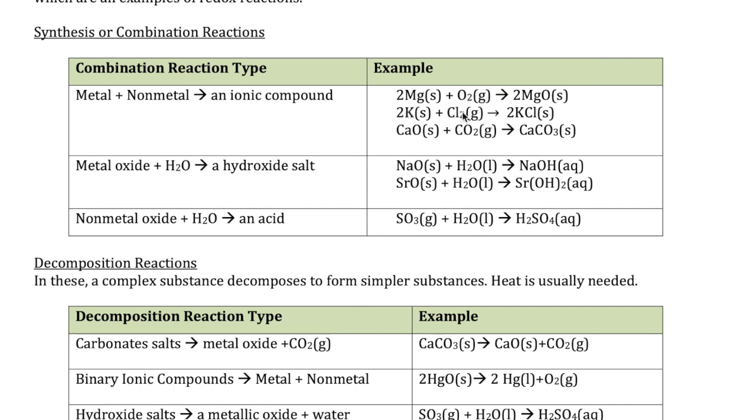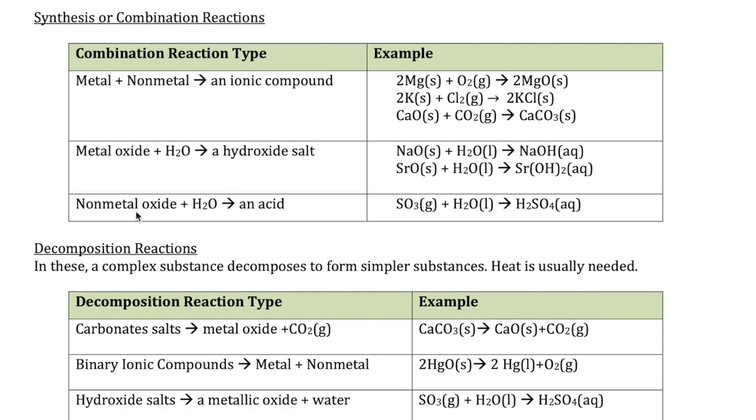Another way this can happen is if you have a metal oxide with water to form a hydroxide salt. So metal oxide, for example sodium oxide, add that with water, it's going to form sodium hydroxide. A different pattern would be a non-metal oxide with water, and when that combines, it forms an acid. So here's a non-metal oxide, SO3, sulfur trioxide, combining with water to form sulfuric acid.